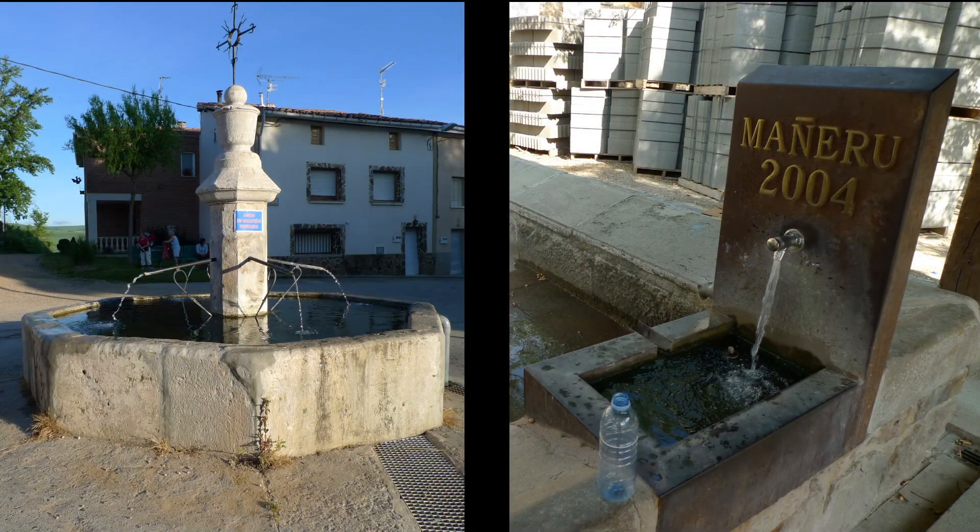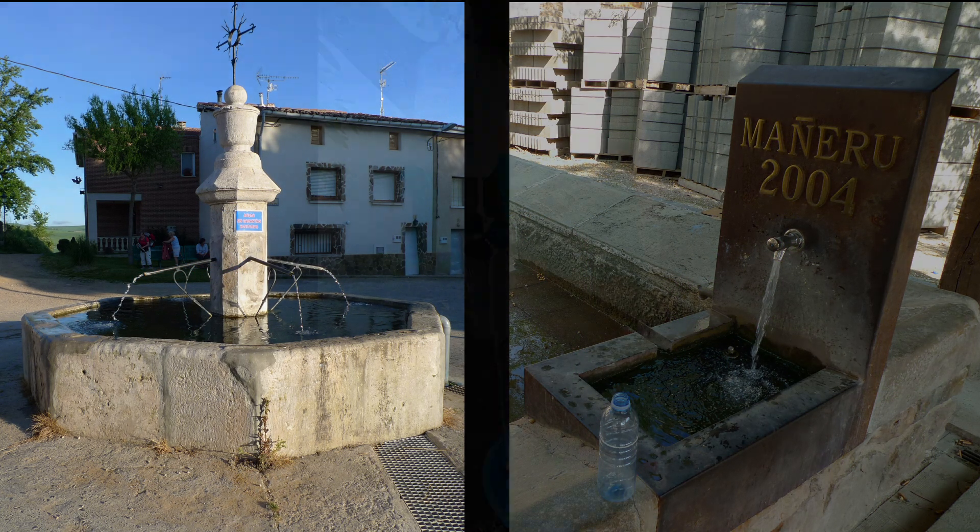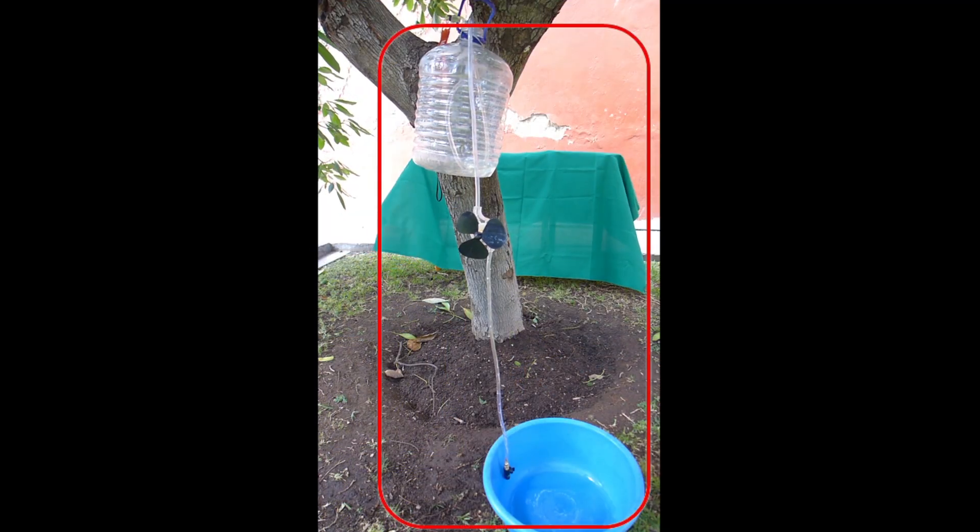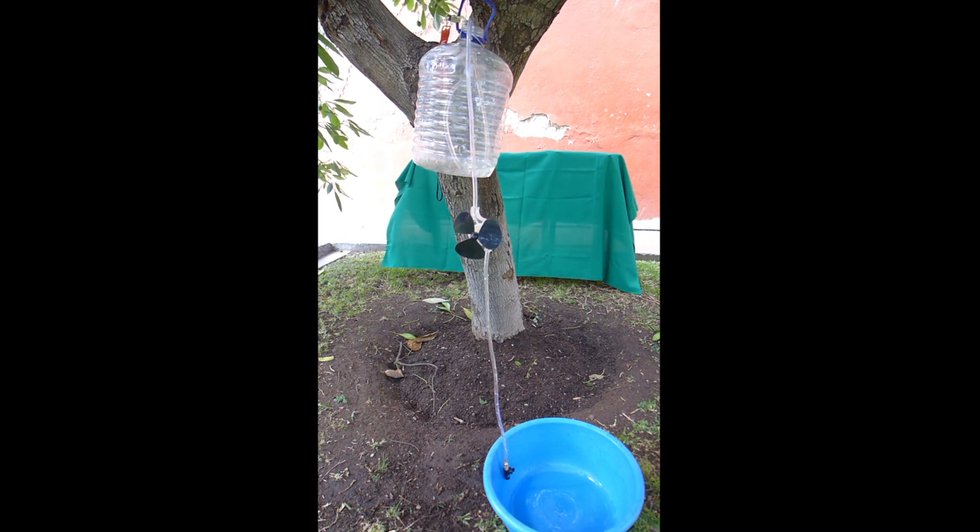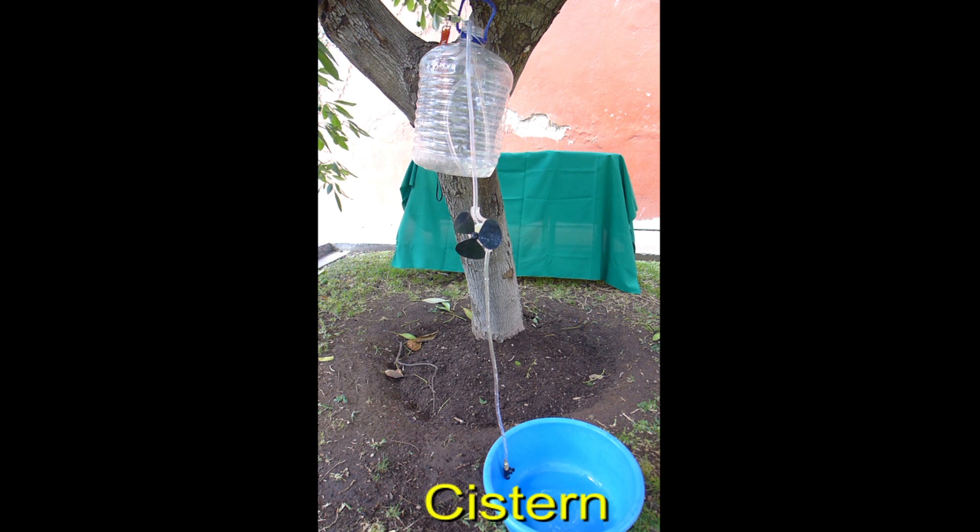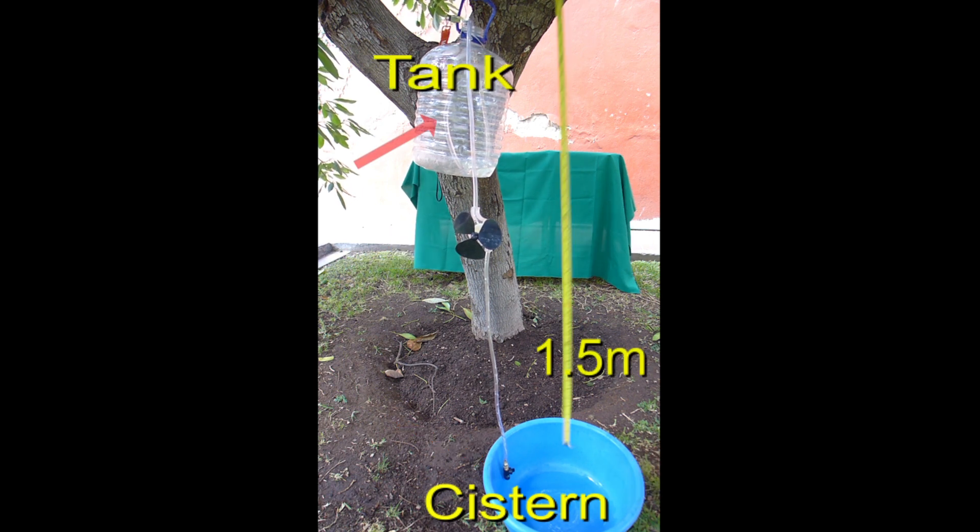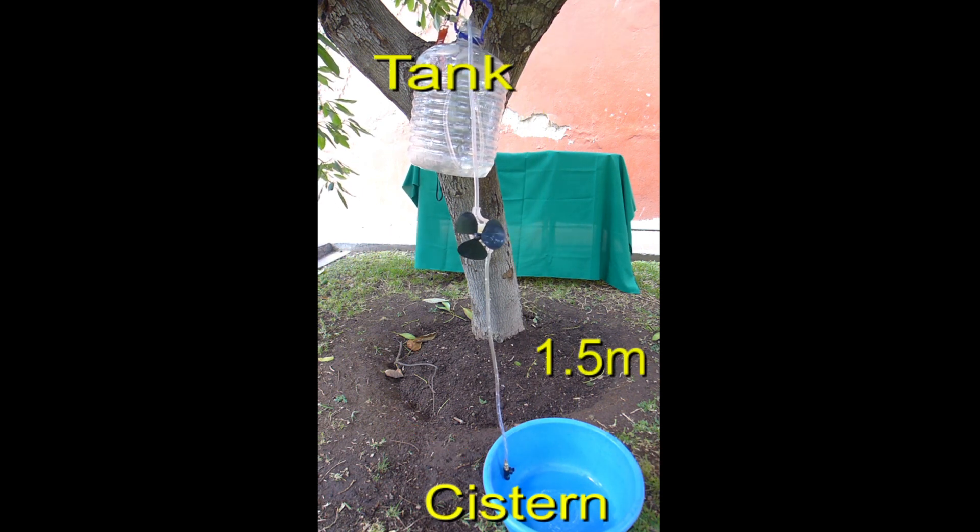These are the fountains that serve to drink water. This is the fountain that is used to operate a hydraulic apparatus. It consists of two containers. The one below that I will call a cistern and the other one, 1.5 meters above, that I will call a tank.